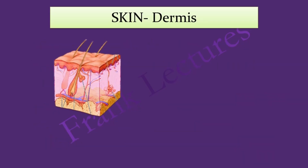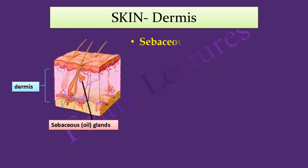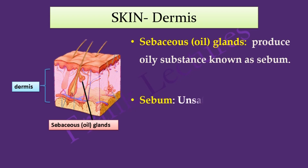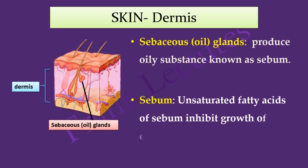The dermis is the inner, thicker portion of the skin, composed of connective tissue. The dermis contains sebaceous, or oil glands, which produce an oily substance known as sebum. This sebum contains unsaturated fatty acids which inhibit the growth of certain bacteria and fungi.